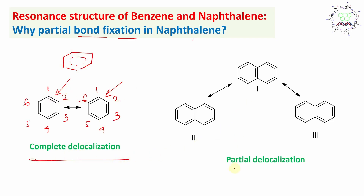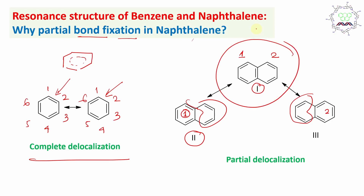It is a complete delocalization. But if you look at naphthalene, in structure number 1, both ring 1 and ring 2 are aromatic. But if you look at canonical form 2, ring 1 is aromatic but ring 2 is not. In structure number 3, ring 2 is aromatic but ring 1 is not. So you can clearly say this canonical form has more stability because both rings are aromatic, so it will have more contribution. Consequently, this bond is expected to be double bond type, and this bond is expected to be more single bond type.